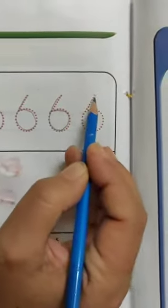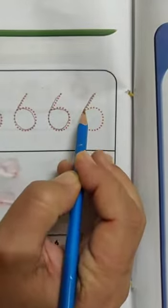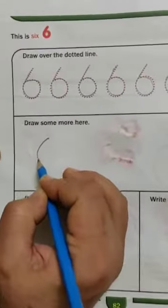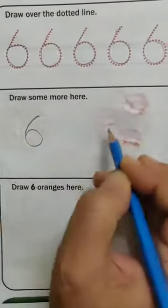And you have to count 6 plates, 6 spoons, 6 vegetables, 6 fruits. You have to learn how to count these things. Now draw some more 6. Like this.